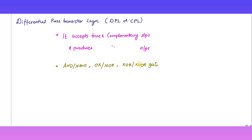In order to generate the differential signals, we require extra circuitry. It has the advantage of implementing complex gates such as XOR. Due to the availability of both polarities of every signal, it eliminates the need for extra inverters. This comes under static logic — static CMOS gates.